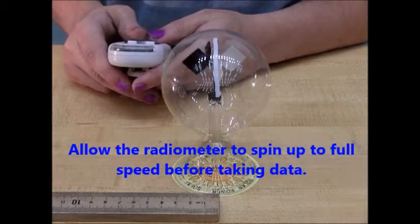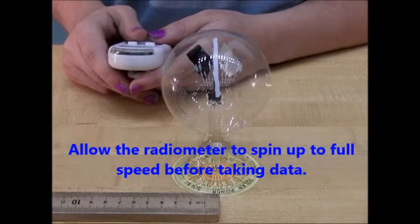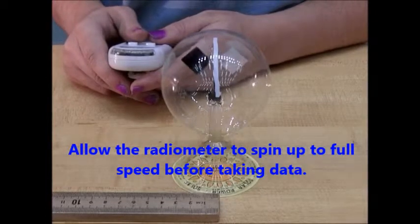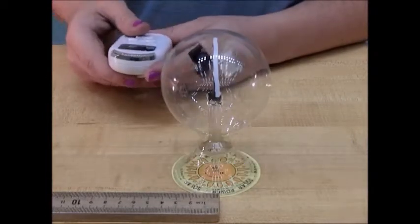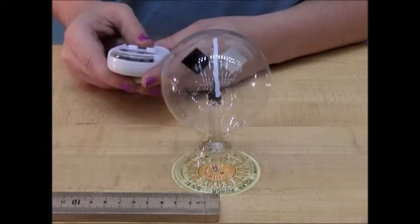We are about to time the number of rotations that occur in 15 seconds when our light source is placed one meter from our Crookes radiometer. We will count the number of rotations in three, two, one, go.